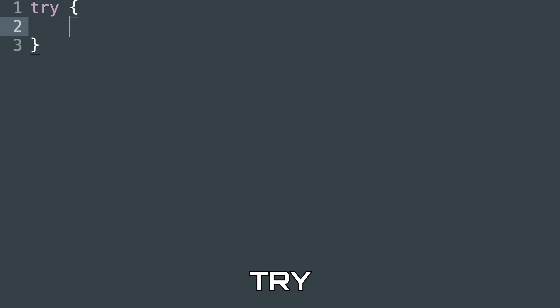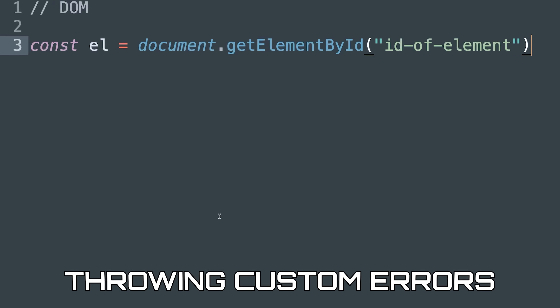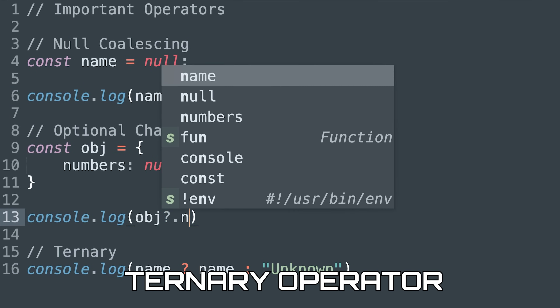If you know everything mentioned in the beginner section, you're well on your way to becoming an intermediate JavaScript developer with the fundamentals down. Now we're moving to intermediate — these topics are quite important, allow you to create more complex apps, and get you to the point where you might land a job. Starting here we have error handling: try, catch, finally — how you properly handle errors in your code.